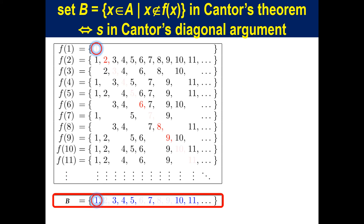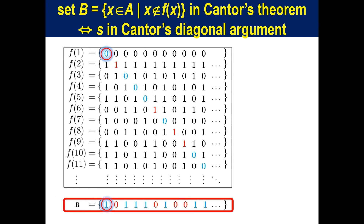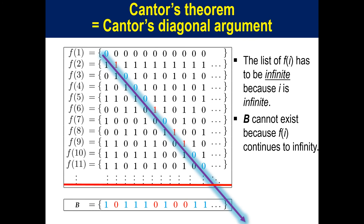The similarity between set B — Cantor's diagonal set in Cantor's Theorem — and S in Cantor's Diagonal Argument can be seen more clearly by changing the presence or absence of each element in the set as 1 or 0. Thus, Cantor's Theorem is Cantor's Diagonal Argument, and as in Cantor's Diagonal Argument, it does not hold in infinity because the listing of f_i continues and B cannot exist.